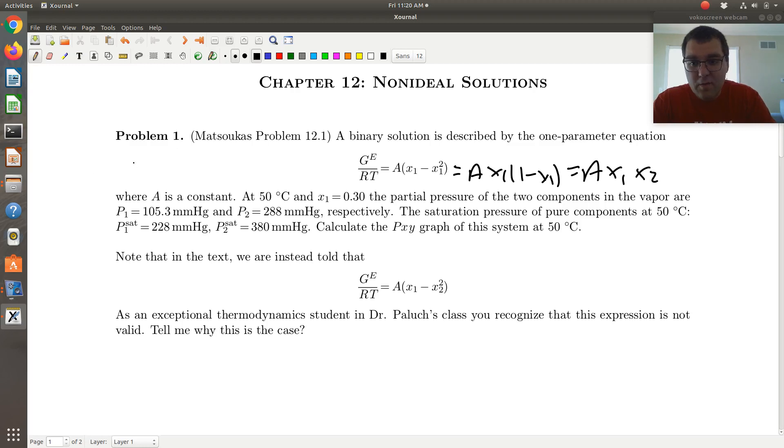And so for this case, we had then that log gamma 1 was equal to a x2 squared, and log gamma 2 is equal to a x1 squared. So go ahead and look at that screencast if you want to see how we get these expressions, and they should also be worked out in the text.